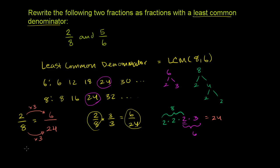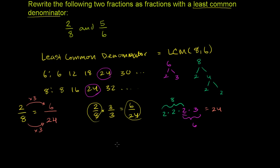And let's do the same thing with 5 sixths. So 5 over 6 is equal to something over 24. To get the denominator from 6 to 24, we have to multiply it by 4. So if we don't want to change the value of 5 sixths, we have to multiply the numerator and the denominator by the same thing. So let's multiply the numerator times 4. 5 times 4 is 20. 5 sixths is the same thing as 20 twenty-fourths.